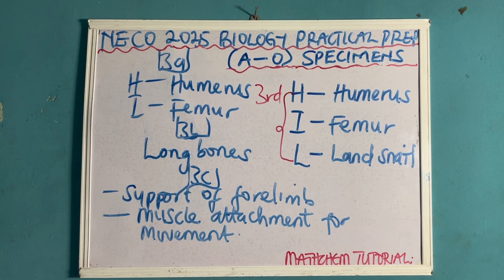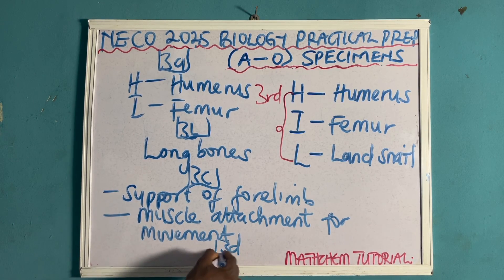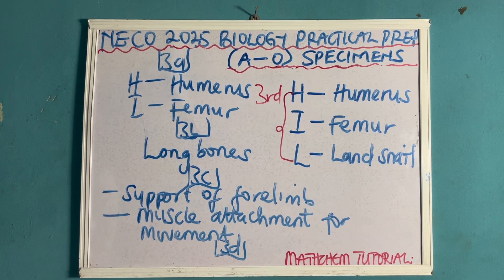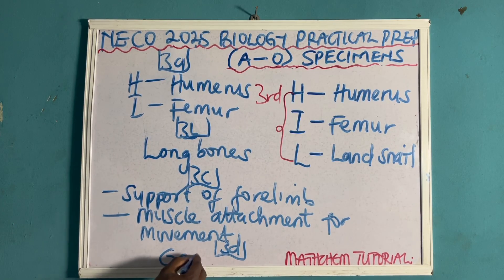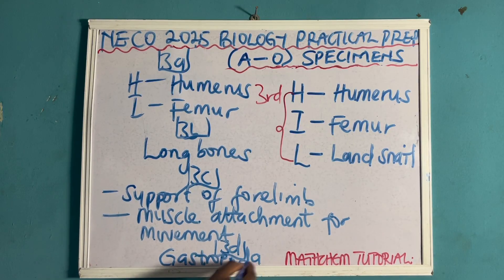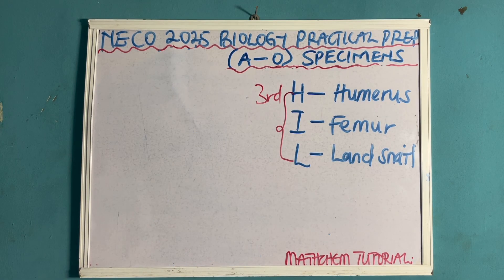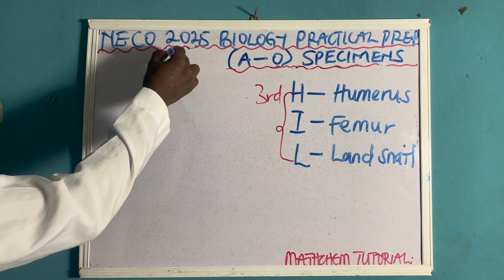Question 3D: they can ask you to classify specimen L. Specimen L, the land snail, is classified as Gastropoda — G-A-S-T-R-O-P-O-D-A.